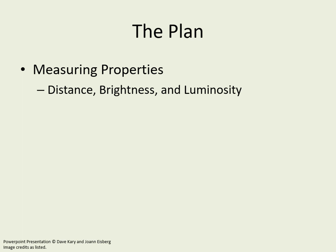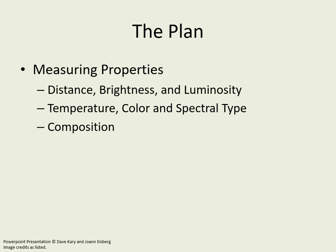This includes three things that impact each other — distance, brightness, and luminosity. If you know any two of these, you can figure out the third. Then we'll look at how we can measure a star's temperature and spectral type, which proves to be closely related. We'll also use spectra to find the composition of stars.